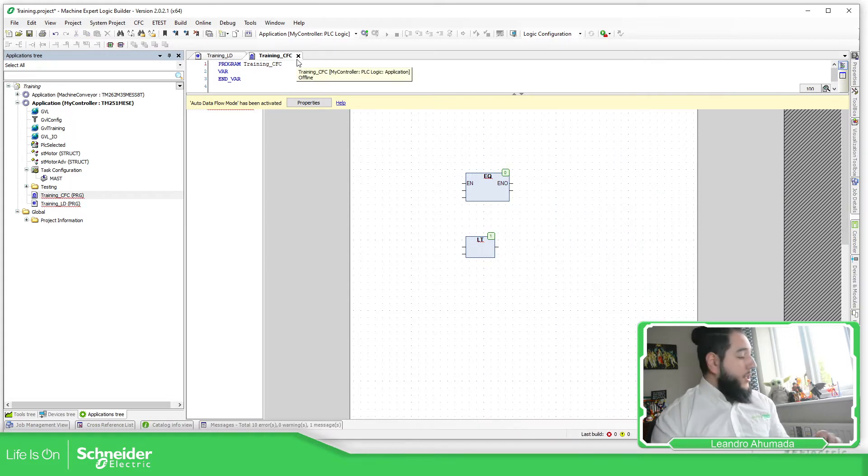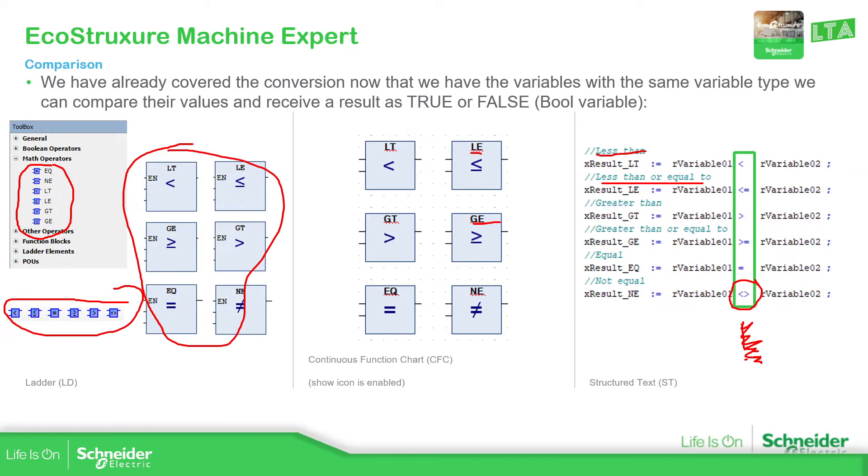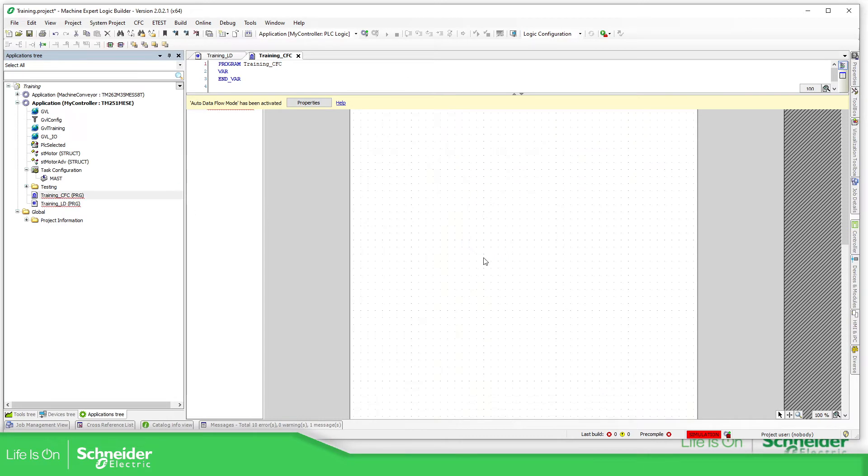The last one is the structured text that I show you over here. So instead of using this, the names of the function, we just can use the icons, as you can see over here, to make the comparison. Less than, less than or equal. You have all the definitions. Probably the ones you need to take a look is the not equal. Depending on the software, it can change. Or you can use the exclamation and equal defined or wrong. That's another way, but not in machine expert. So you can use this one. And let me just go to the software once again.